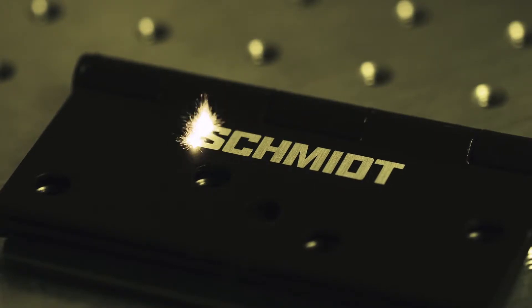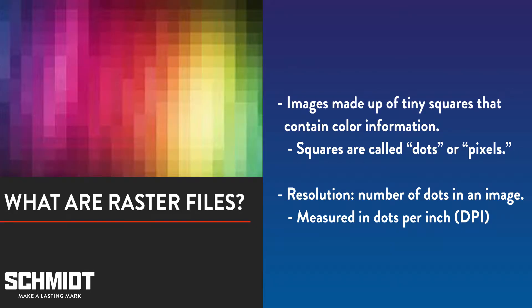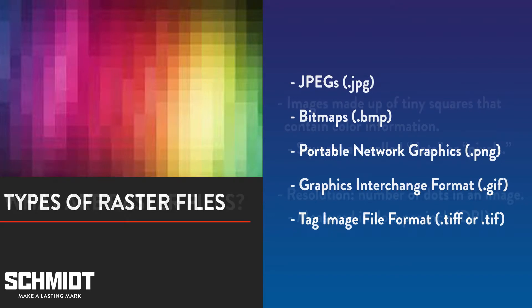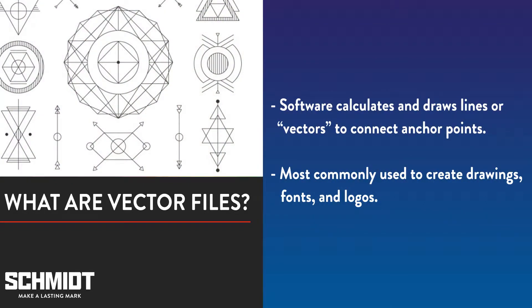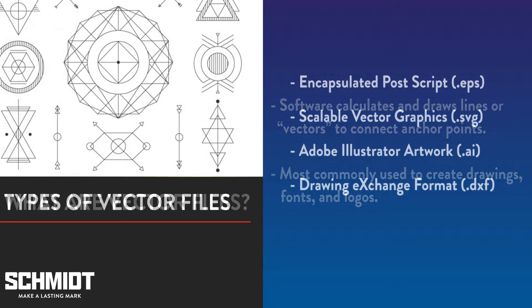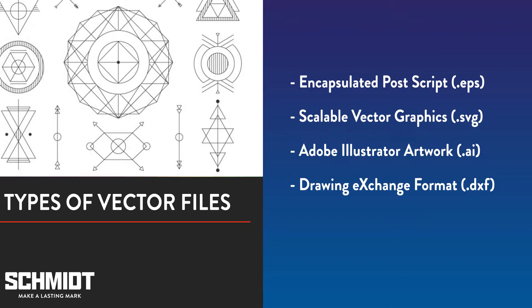Today we'll be talking about laser marking with vector files, but before we get to that let's quickly review the difference between vector files and raster files. Raster files are images made of tiny squares that contain color information. The squares are called dots or pixels, and the number of pixels in the image make up the image's resolution. Some of the most common types of raster files include JPEGs and bitmaps.